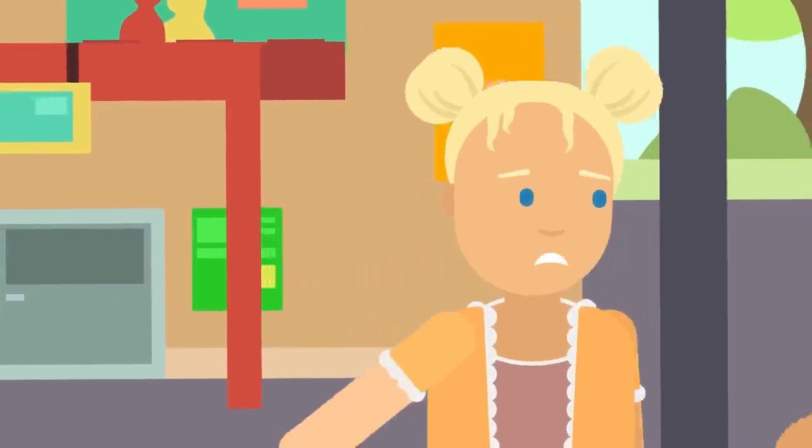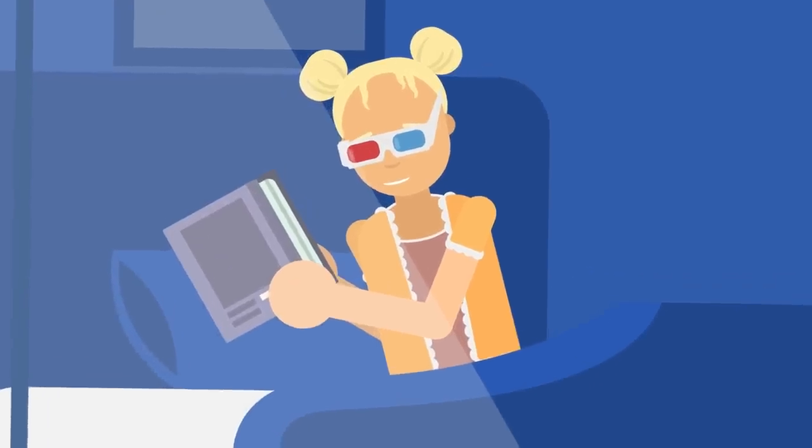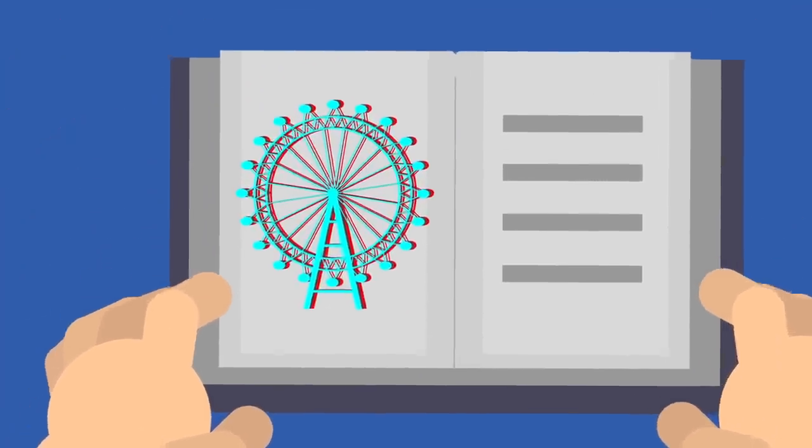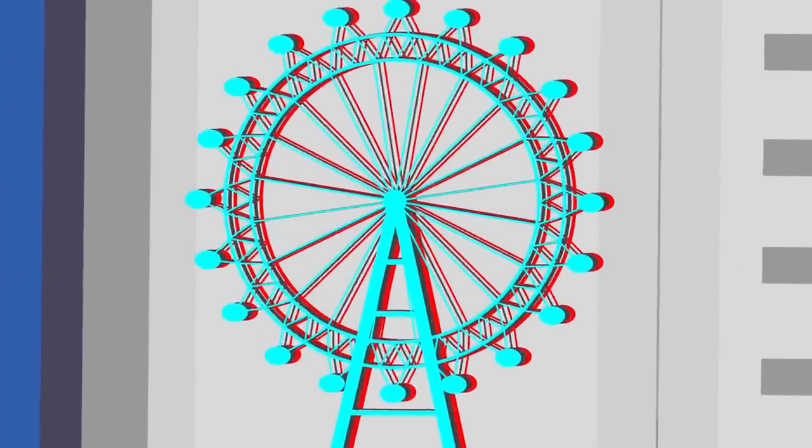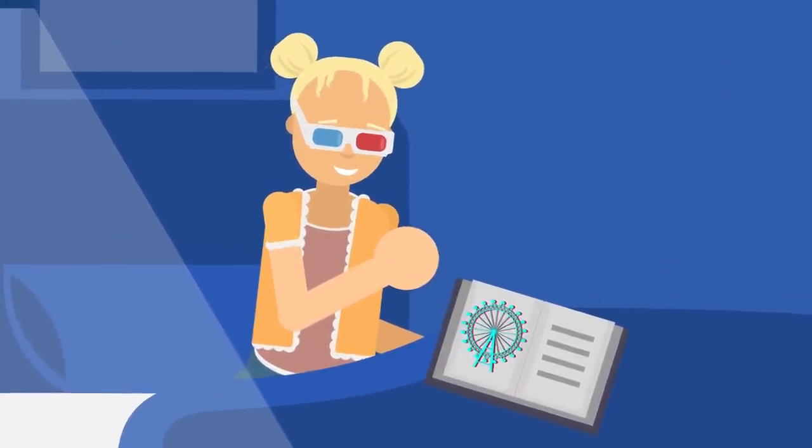Excited by the prospect of getting to experience 3D, Andrea grabbed a pair of glasses and ran straight for the bookstore. Later that night, she was in her bedroom with a stereoscopic image of a Ferris wheel. Andrea adjusted the glasses, and the Ferris wheel really did pop right off the page. She marveled at the image coming out of the book and felt like she could almost touch it.